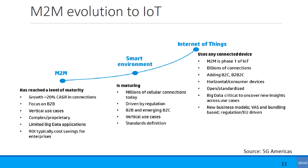From a 5G Americas white paper, this shows how M2M evolves into IoT. M2M is focused on business-to-business vertical use cases, complex and proprietary, with limited big data applications. It evolves to smart environment and then Internet of Things, where M2M is referred to as phase one of IoT. IoT allows business-to-consumer and business-to-business-to-consumer models, horizontal and consumer devices, open and standardized big data to uncover critical new insights, and enables new business models.